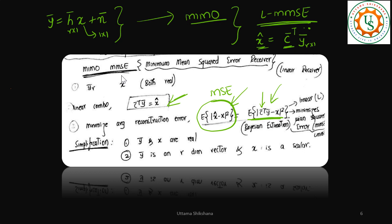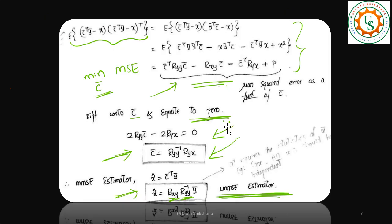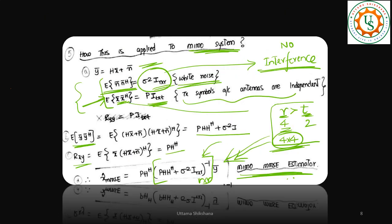For MIMO MMSE I have taken the linear estimator which is this particular equation. While doing the derivation, one important aspect was considered: the expectation of noise and noise Hermitian, this particular thing is equal to sigma square identity. So it was white noise and there was no interference at all.